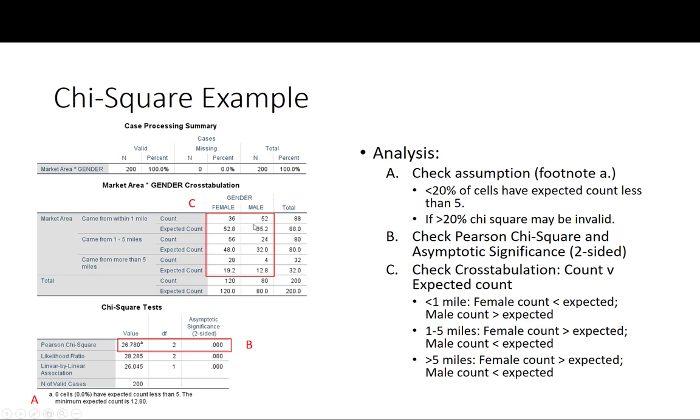On the flip, if we compare that to males: coming from within 1 mile our count is 52, our expected count was 35, so males are more likely to come from within 1 mile than expected. From 1 to 5 miles, 24 is the count, the expected count was 32, so there are less people coming from 1 to 5 miles than expected. The same thing happens with more than 5 miles. There are less males coming from more than 5 miles than expected.